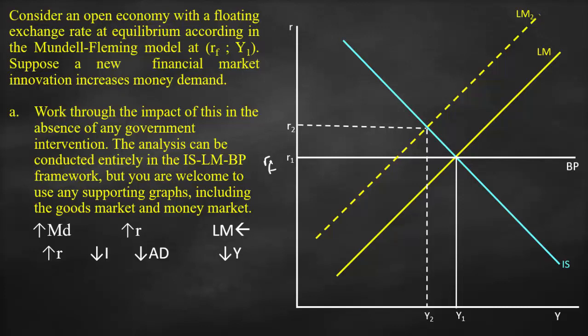So at a higher interest, what will happen to the investment? Investment will go down because of crowding out effect. Consequently, lower investment would result in lower aggregate demand. Lower aggregate demand would result in lower output.